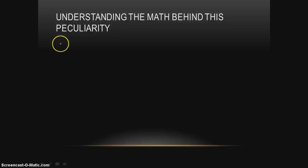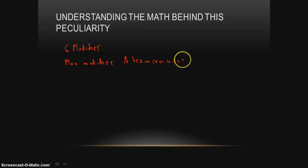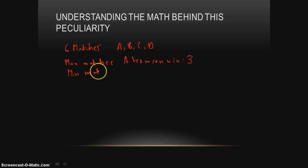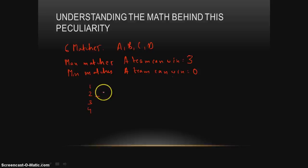Let me reiterate the key points. There were 6 matches in all. The maximum number of matches a team can win is 3 — because with 4 teams, a team only plays 3 matches. The minimum matches a team can win is 0. Now let's find the minimum number of wins for a team to finish in the top 2.